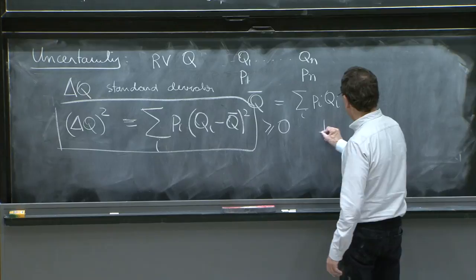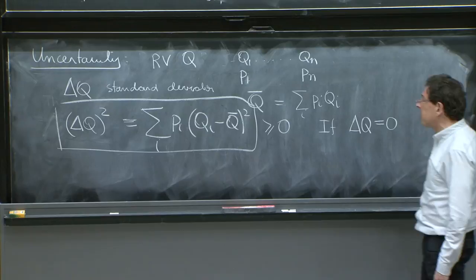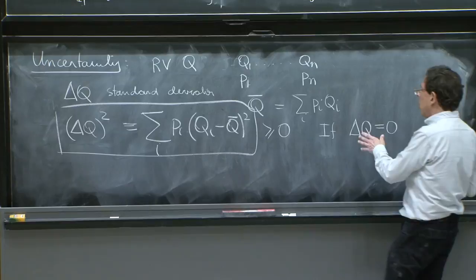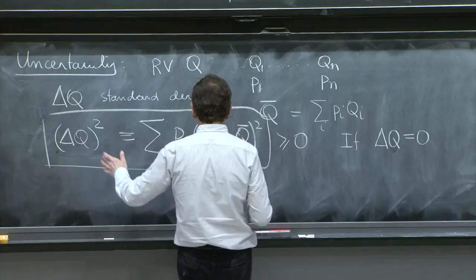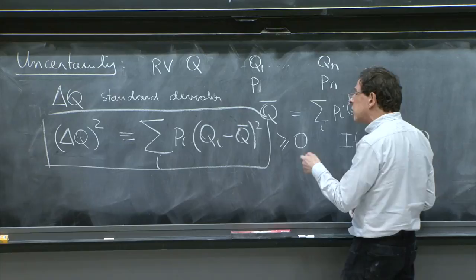And moreover, you can actually say the following. Similarly, if the uncertainty or the standard deviation is 0, the random variable is not that random. Because if this whole thing is 0, delta q squared must be 0, and this must be 0.